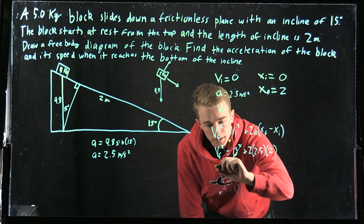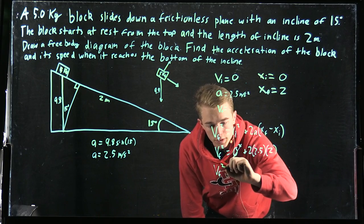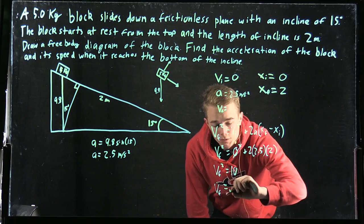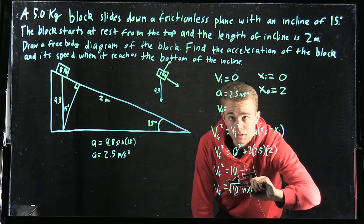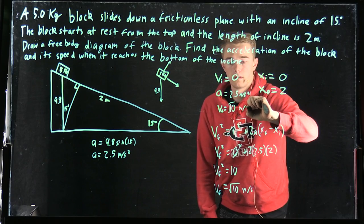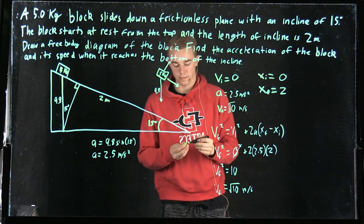And then this goes away. So we have vf squared equals 10, so vf equals root 10 meters per second. Thank you.